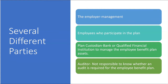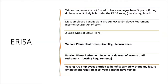This topic is growing in importance on the CPA audit exam. While companies are not forced to have employee benefit plans, if they do have one, it likely falls under ERISA rules. Most employee benefit plans are subject to the Employee Retirement Income Security Act, better known as ERISA. There are two basic types of ERISA plans: welfare plans and pension plans, and both can be subject to ERISA rules.